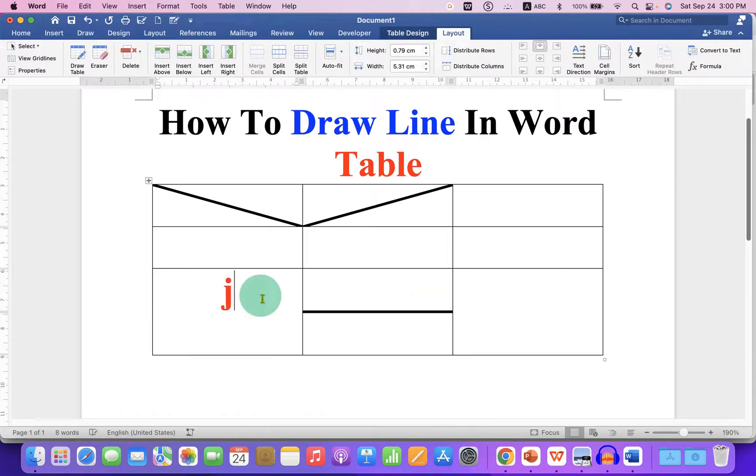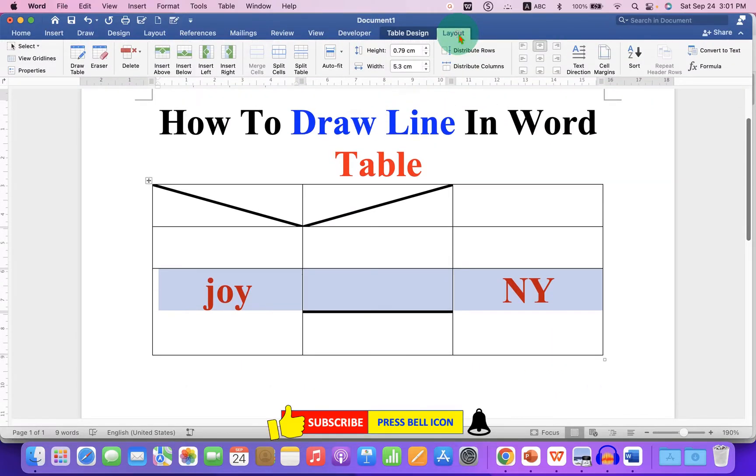However, notice that when you type into the cell left and right, you will notice that the text is not at the center of the cell. So to make this text at the center of the cell, select the cells. Go to the Layout tab here and select the option Align to Center to bring text inside the center.